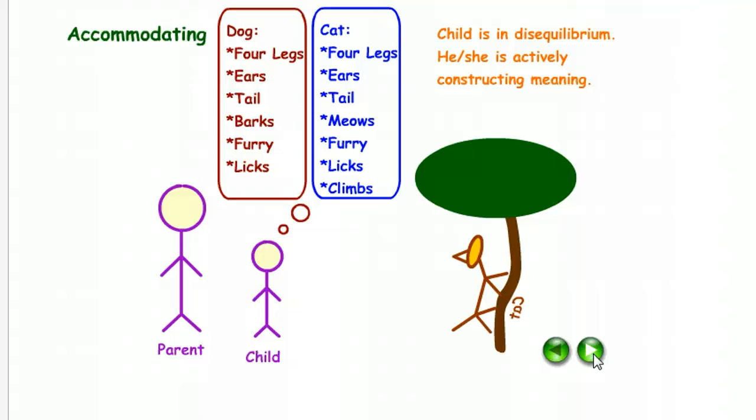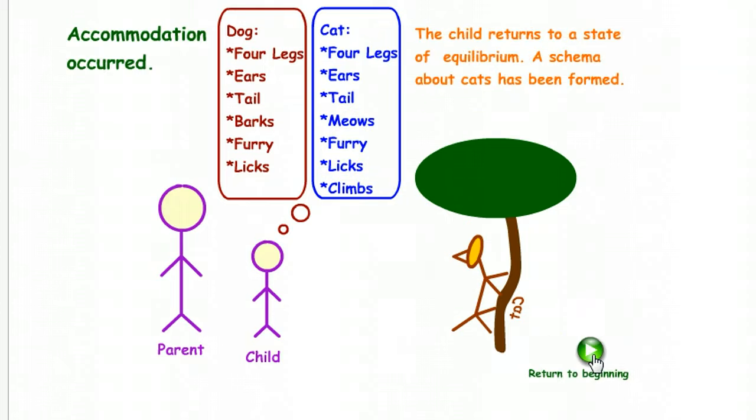So the child is in disequilibrium. Here she is actively constructing meaning. This new schema says cat: four legs, ears, tail, meows, furry, licks, and climbs. Accommodation has occurred. The child returns to a state of equilibrium. A schema about cats has formed.